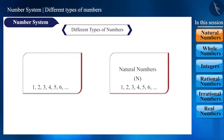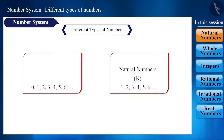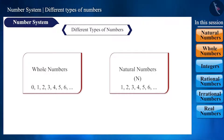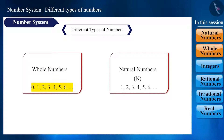Now, if we add the number 0, this series will be called whole numbers, which are 0, 1, 2, 3, 4, 5, 6, etc. These are indicated by the symbol W.